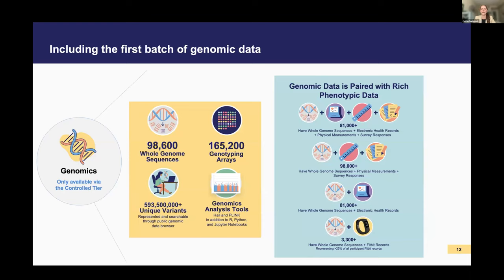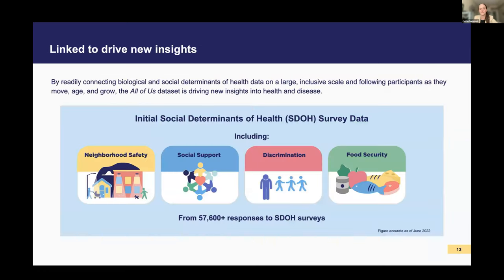The real value of this data is when you start combining different types together. If you're interested in associating a specific genomic polymorphism with electronic health records and survey responses, you can quickly identify a sample far larger than what a single researcher or institution could do alone. Earlier this year, All of Us released their first wave of social determinants of health survey data, allowing researchers to understand factors like neighborhood safety, housing stability, the built environment, social support, discrimination in everyday and medical contexts, and food insecurity.